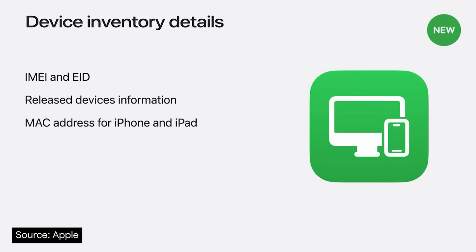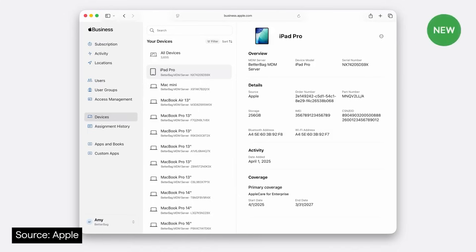Onto device inventory. IMEI and other info has been available in ASM or ABM for some time already, and MAC address information for Wi-Fi and Bluetooth will be added later this year. Alongside those, we'll soon see device warranty info too. There are lots of homebrewed solutions to get this information, so this will be a time saver — we'll be pouring one out for GSX pretty soon. Rounding out ASM and ABM, we get granular privileges for the device enrollment manager role and managed account support for developer services.